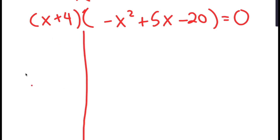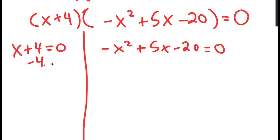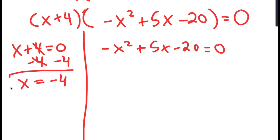This gives two equations: x plus 4 equals 0, and negative x squared plus 5x minus 20 equals 0. For x plus 4 equals 0, subtracting 4 on both sides gives x equals negative 4.